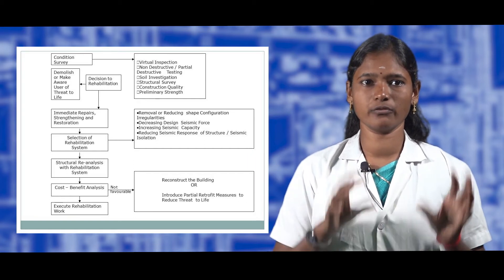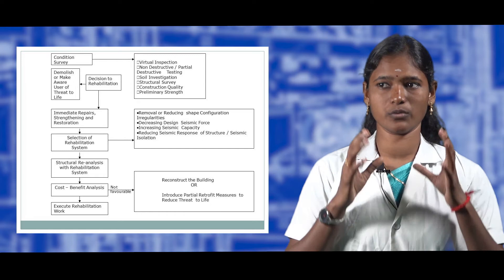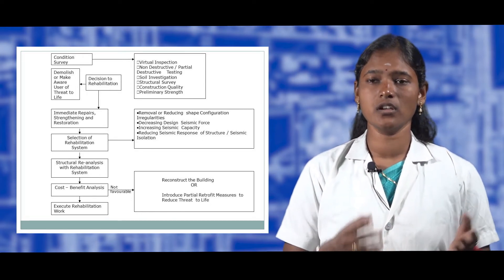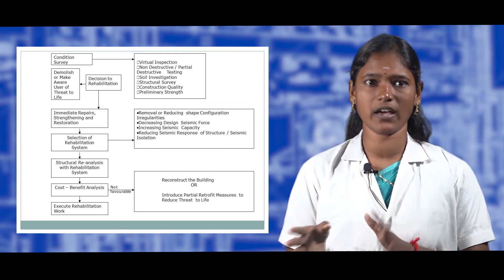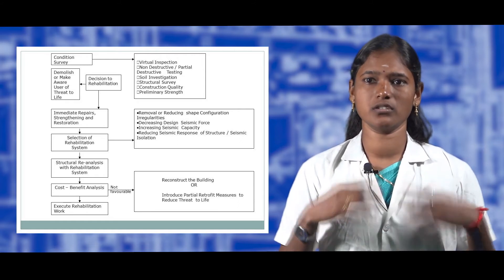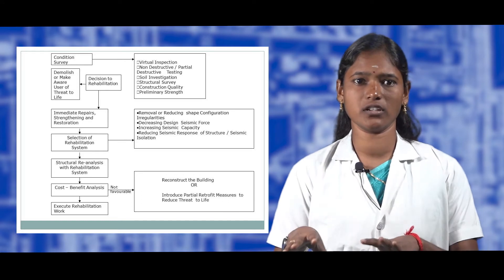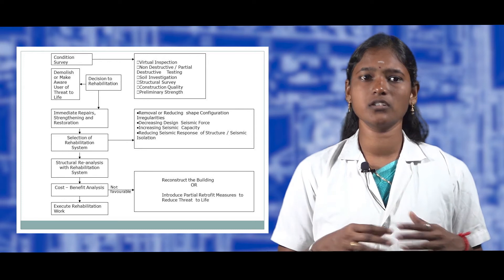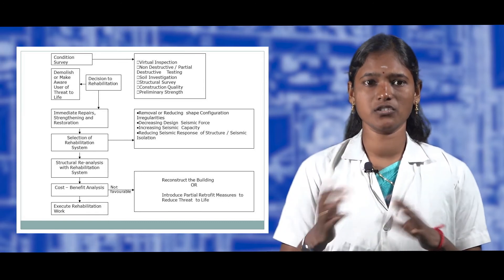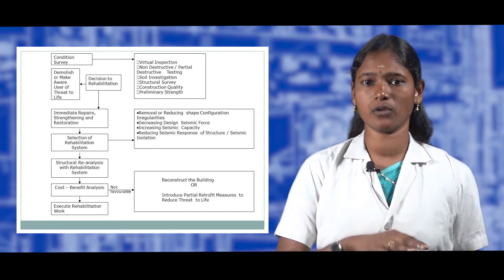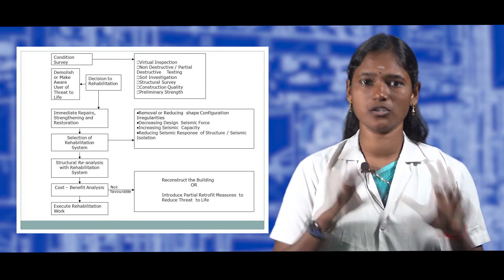The various aspects of inspection are shown in a flowchart. First, a conditional survey is conducted, including a visual inspection of the building. Next, non-destructive and destructive testing are carried out, followed by soil investigation, structural investigation, and preliminary investigation. Then a decision is made on demolition or making users aware of life threats. Immediate repair — strengthening or retrofitting — is decided, a rehabilitation system is selected, structural re-analysis is performed, a cost-benefit analysis is done, and rehabilitation work is executed.